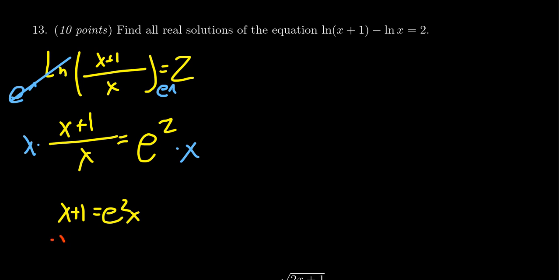I'm going to subtract x from both sides, which gives us 1 = e^2·x - x. The e^2 is just a number, but we can think of it in terms of factoring. Both terms are divisible by x, so if you factor out the x, you end up with (e^2 - 1)·x.